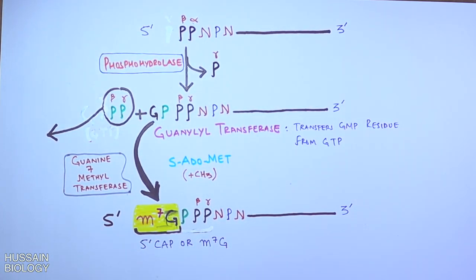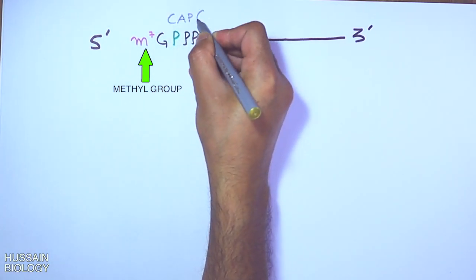Now let's see the concepts of cap 0, cap 1, and cap 2 structures of mRNA capping. The first normal structure is m7G phosphate phosphate phosphate, meaning the methyl group is added to the 7th position of guanosine only. In this structure only one methylation has taken place, on the guanosine residue, so this structure is termed cap 0.